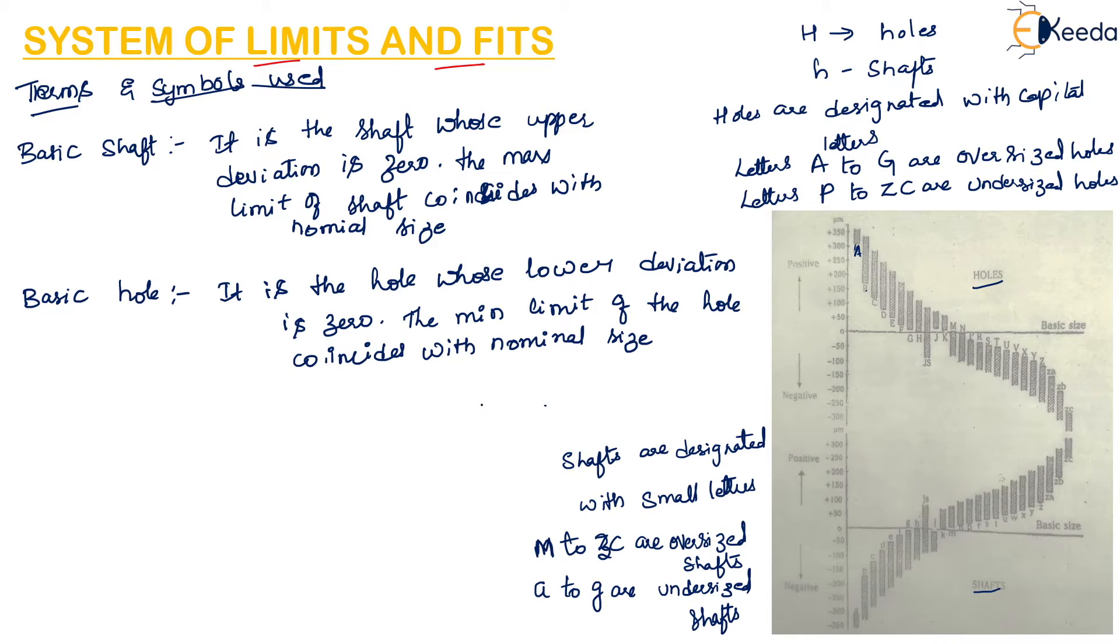Basis of fits. In hole basis system, the basic diameter of the hole is constant while the shaft size is varied according to the type of fit. The size of the hole will be constant, it will not change, but the shaft size will be changed according to the type of fit required.